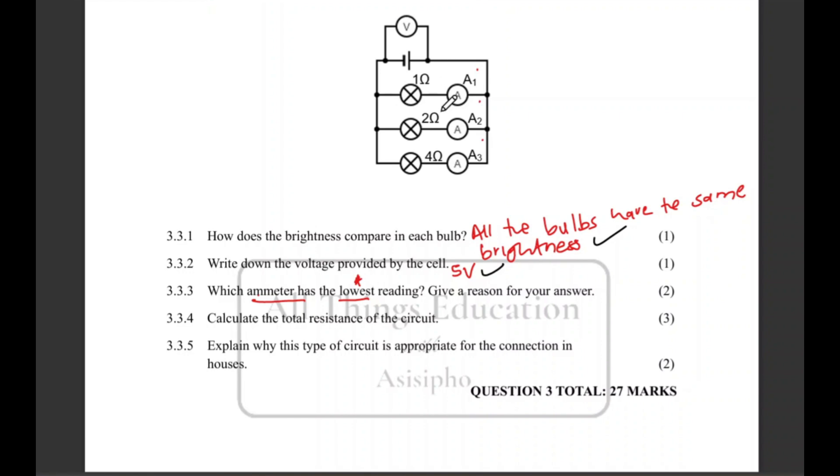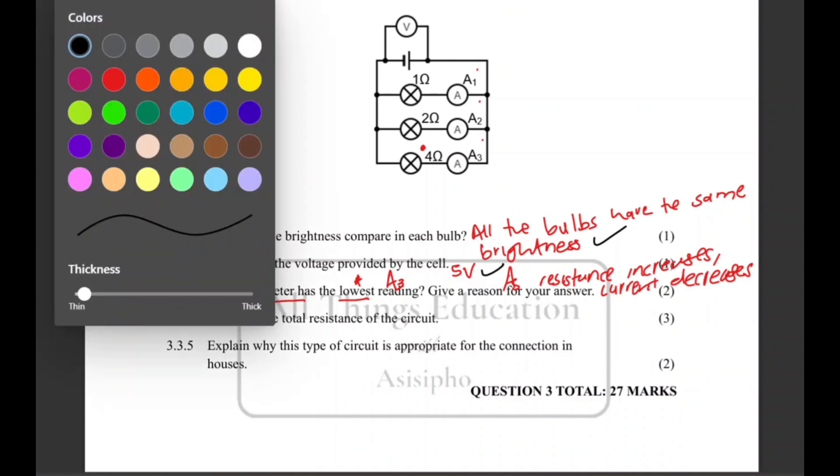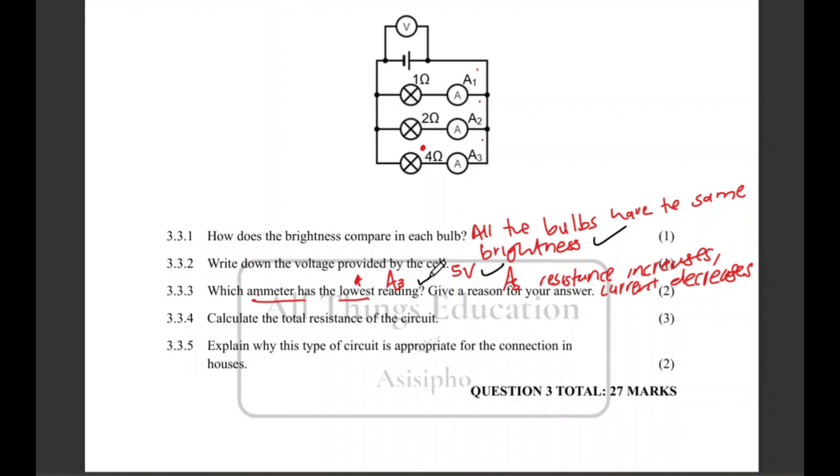We know that as resistance increases, the current is going to decrease. So the bulb with the highest resistance is the one with 4 ohms, that means A3 is the one with the lowest reading. The reason for that is as resistance increases, the current decreases. And we know that the ammeter measures the current. So it's a two-part question: you answer about the ammeter first, then you give a reason for your answer.